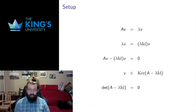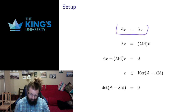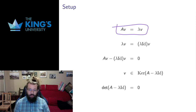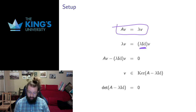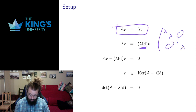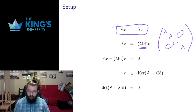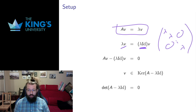Now I want to talk about how to actually calculate these things, so I'll go through a setup to give us the algorithm for calculating eigenvalues and eigenvectors. Here's the definition: I have a non-zero vector v which is multiplied by lambda when the matrix A acts on it. Being multiplied by lambda is the same as being acted on by the matrix lambda times the identity — the matrix with lambdas down the diagonals and zeros everywhere else. That is exactly the same as scalar multiplication by lambda.